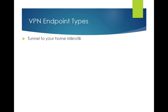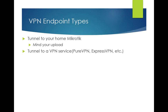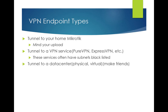VPN endpoint types: you can tunnel to your home MicroTik router, but you have to keep in mind your upload limit. If you've got DSL with 30 megabits down and one megabit up, trying to send four megabits through a one-megabit pipe will give you problems. You could also use a tunnel service like PureVPN or ExpressVPN — but a lot of times those subnets get blacklisted by the streaming services because they figure out what the IP space is and blacklist them.